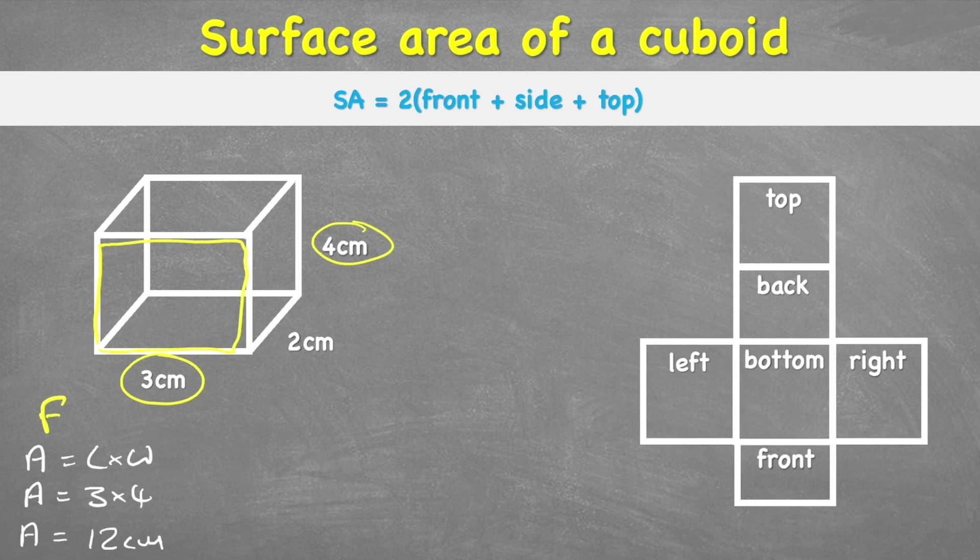But centimetres what? Well, when we're looking at area, what we're doing is we're building little squares inside our shape, and then we are using those to create the measurement. So here we have 12cm, and we call them squares. So we have 12cm squared. So that's our front done.